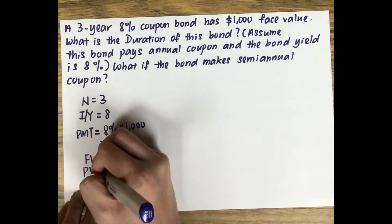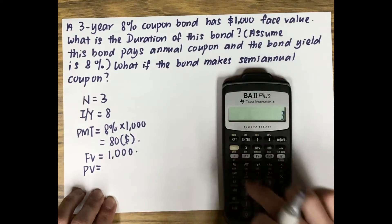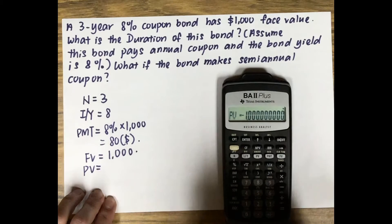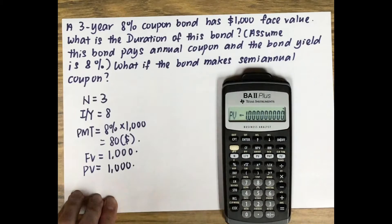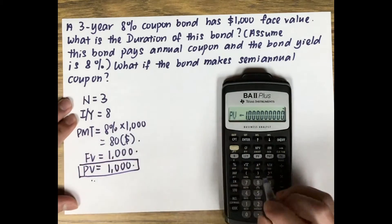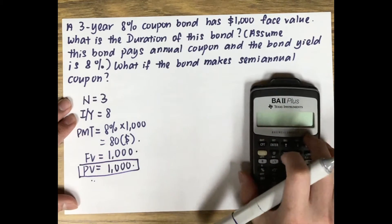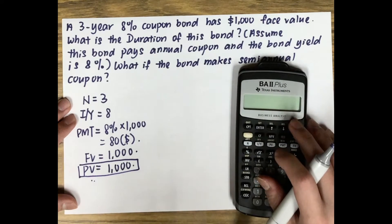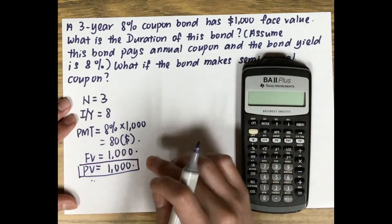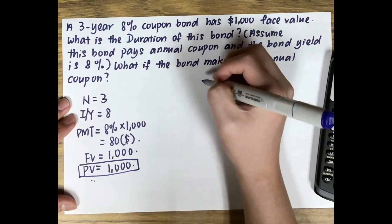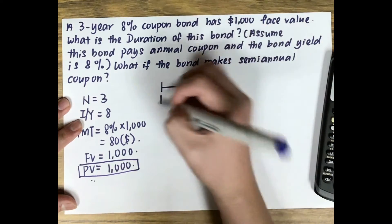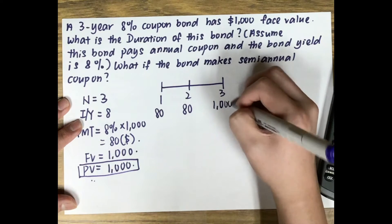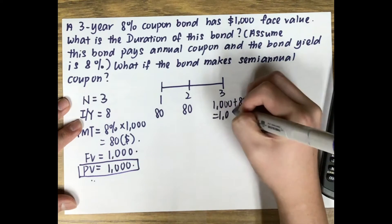The present value of this bond is $1,000, and we'll need that number later. To calculate duration we use the net present value function. The bond pays $80 in year one, $80 in year two, and $1,000 plus $80 = $1,080 in year three.